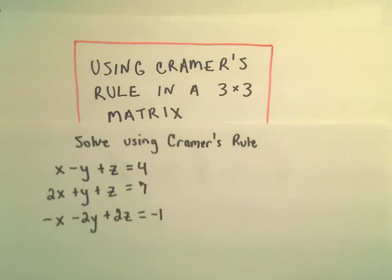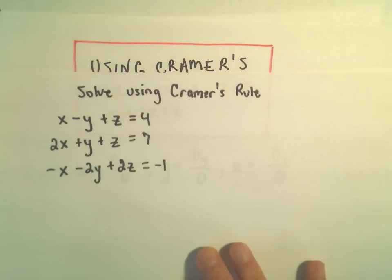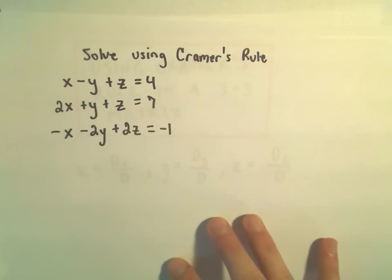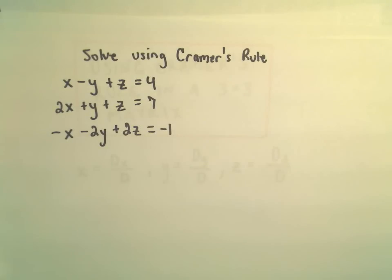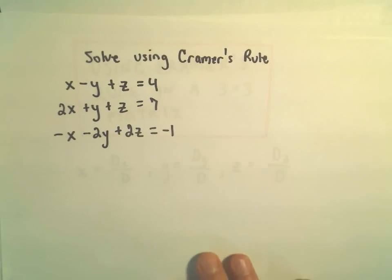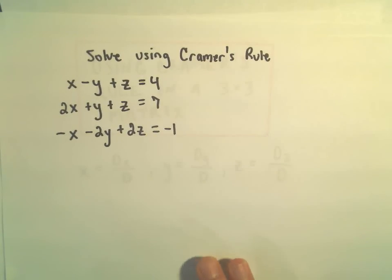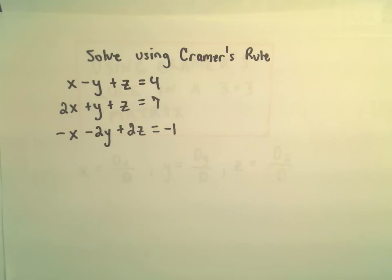In this video I'm going to do another example of solving a system of 3 by 3 linear equations using Cramer's Rule. So we have x minus y plus z equals 4, 2x plus y plus z equals 7, and negative x minus 2y plus 2z equals negative 1.